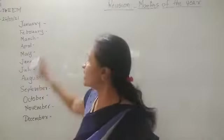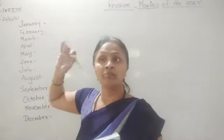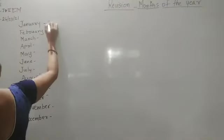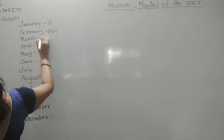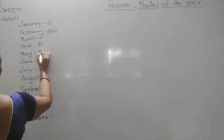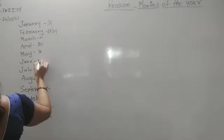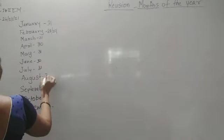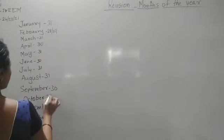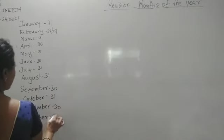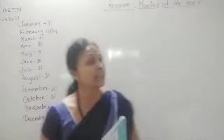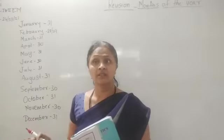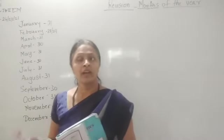Now we will check the number of days which every month is having. January has 31 days, February 28, March 31, April 30, May 31, June 30, July 31, August 31, September 31, October 31, November 30, and December 31. Like this, 12 months are there with a fixed number of days. Every year it is the same — only the year number is changing.